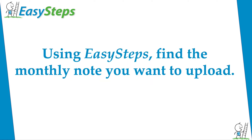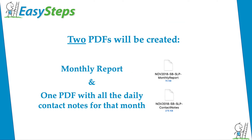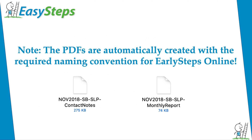If you use the Easy Steps app, we have made this upload process as easy as possible. Just find the monthly note you want to upload and click the PDF button. Two PDFs are created for you: one for the monthly report and one with all daily contact notes for that month. Note, the PDFs are automatically created with the required naming convention for Early Steps Online.